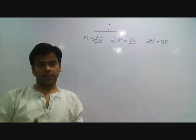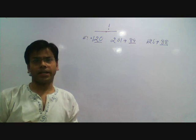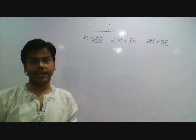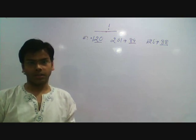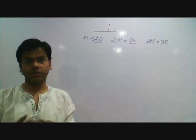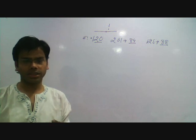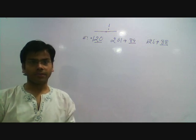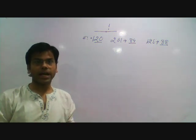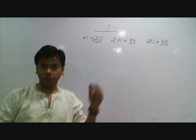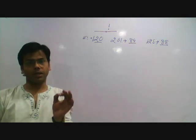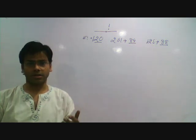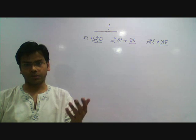Today we will see the concept behind the last non-zero digits in any factorial — last non-zero digits, last two non-zero digits, and so on. For this I have written some factorials. I will use only one basic concept. For the next concepts you should try yourself.